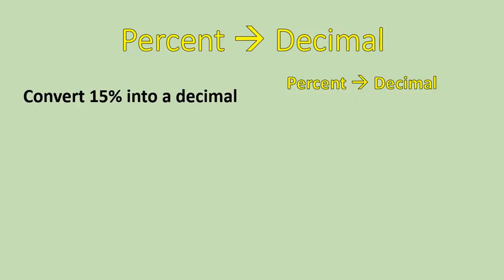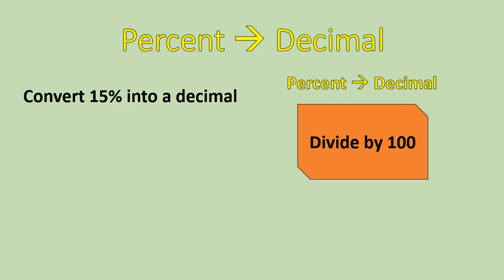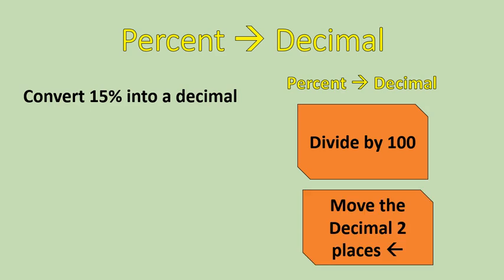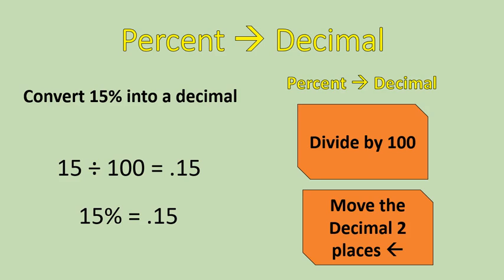Now, if you're given a percent like 15% and you're asked to convert that into a decimal, you can either divide by 100 or move the decimal two places to the left. 15 divided by 100 is 0.15. If moving the decimal, remember that when there's no decimal listed, it appears at the end of the number, so we move it two places left to get 0.15.